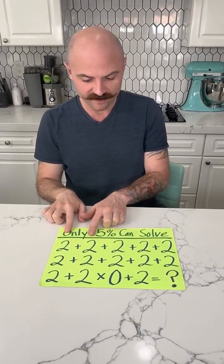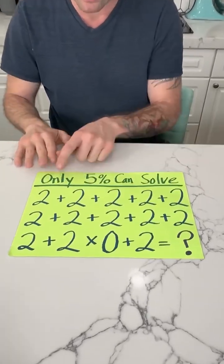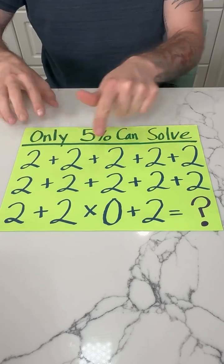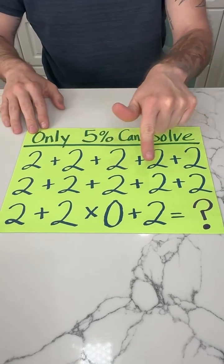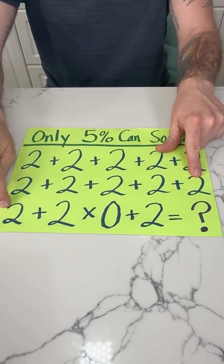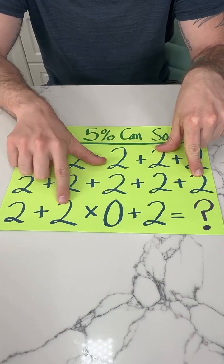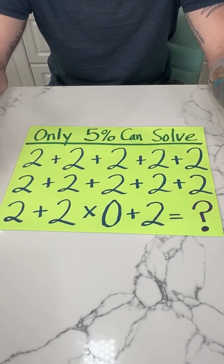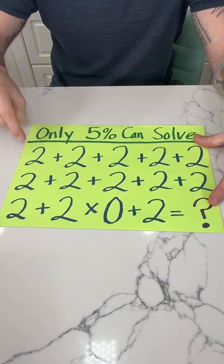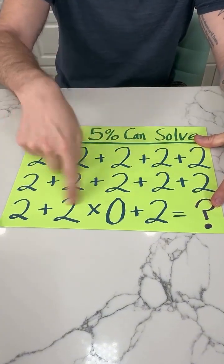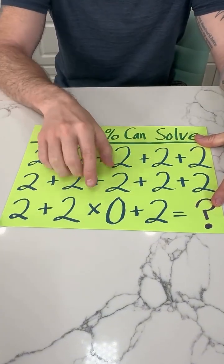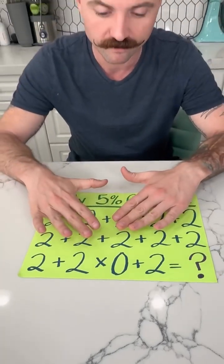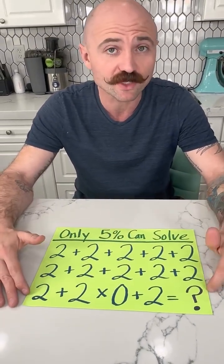So we have 2 plus 2, it's all twos, right? Except for the zeros. So 2, 4, 6, 8, 10, 12, 14, 16, 18, 20, 22, 24 times 0. This is tricky. If you learned math, just follow top to bottom, left to right. 24 times 0 is 0. Everything would be 0, so the answer would be 2.